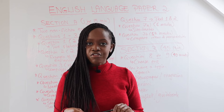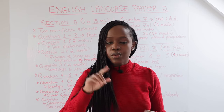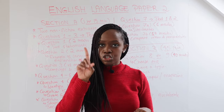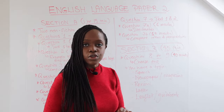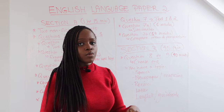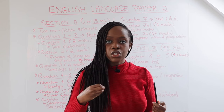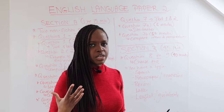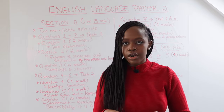The final part of the paper is section B. In total, section B requires you to choose one question — either question eight or question nine — each worth 40 marks. You choose one, and you're given a topic along with a certain framework that you need to follow: a certain way to present the topic, either as a speech, newspaper, magazine, review, letter, or a leaflet or guidebook.